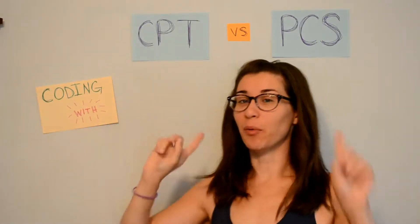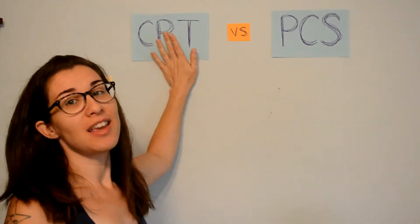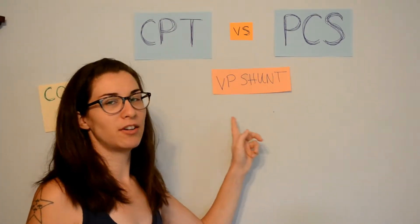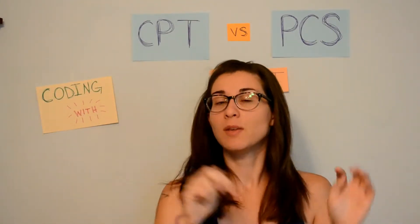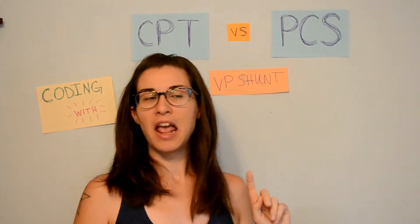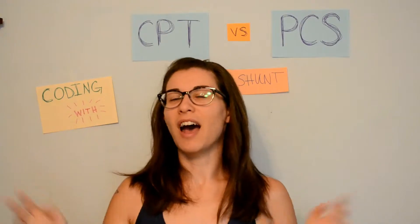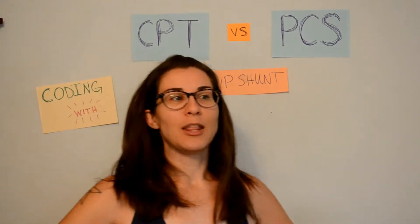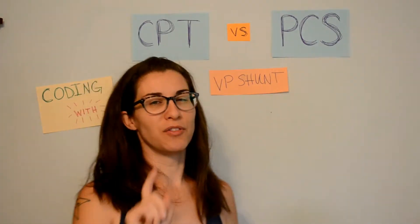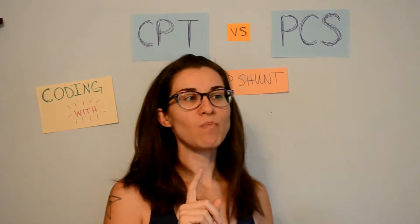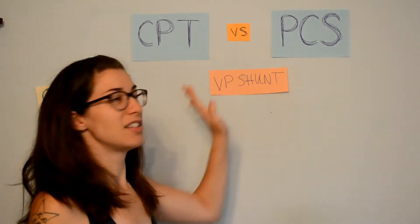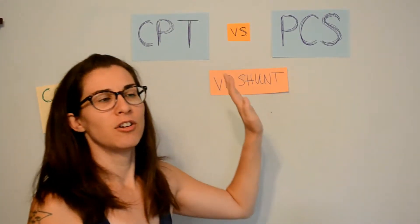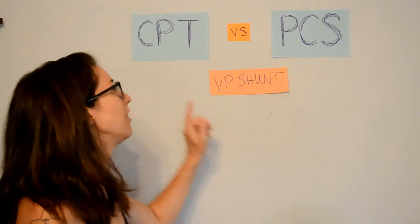Hey everyone, on this episode of Coding with Kate, we are going to be talking about CPT versus PCS, specifically with a VP shunt or a ventriculoperitoneal shunt, which is what we talked about in the previous CPT video, where I attempted to find out how to code that, and it was just weird. I didn't like the process and I didn't like the language. In the back of my head, I was already translating into PCS, and in this episode I wanted to discuss why the format of PCS is easier, better, and more complete than CPT.